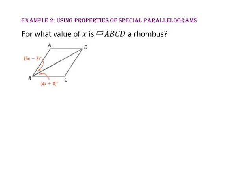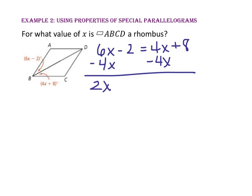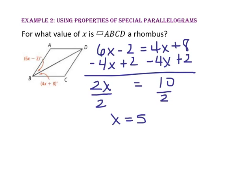In Example 2, we will use the properties of special parallelograms. For what value of x is parallelogram ABCD a rhombus? We know that the diagonals of a rhombus bisect the opposite angles, so angle ABD must be congruent to angle CBD. We write the equation 6x − 2 = 4x + 8, subtract 4x from both sides and add 2 to both sides, then divide by 2 to get x = 5. Checking: 6(5) − 2 = 28 and 4(5) + 8 = 28, so the angles are congruent and x = 5.